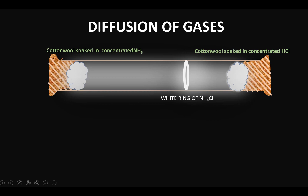Well, for this I will find out the mass of NH3 and the mass of HCl. I'm going to add all the ARs of nitrogen and hydrogen to get the Mr of ammonia, and that is 17 grams. Similarly, calculating the Mr of HCl by adding the ARs of hydrogen and chlorine, I get 36.5 grams.